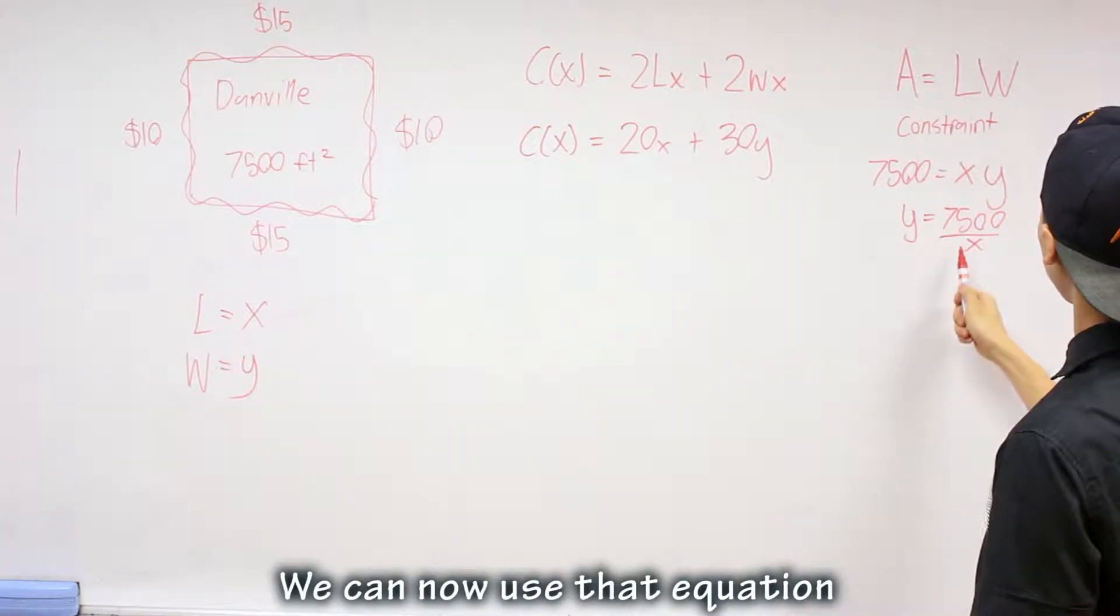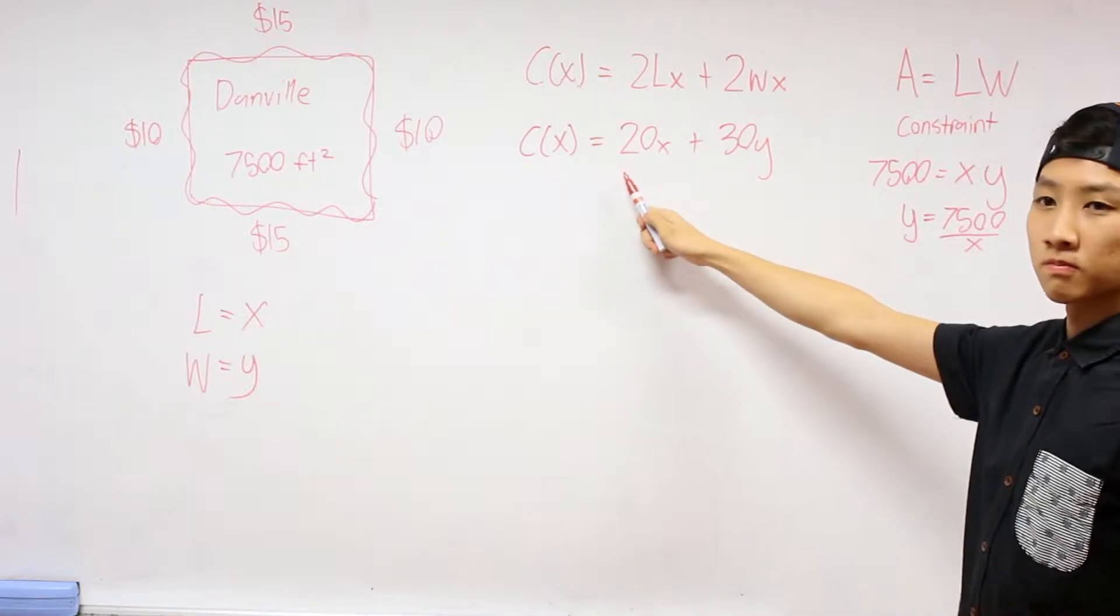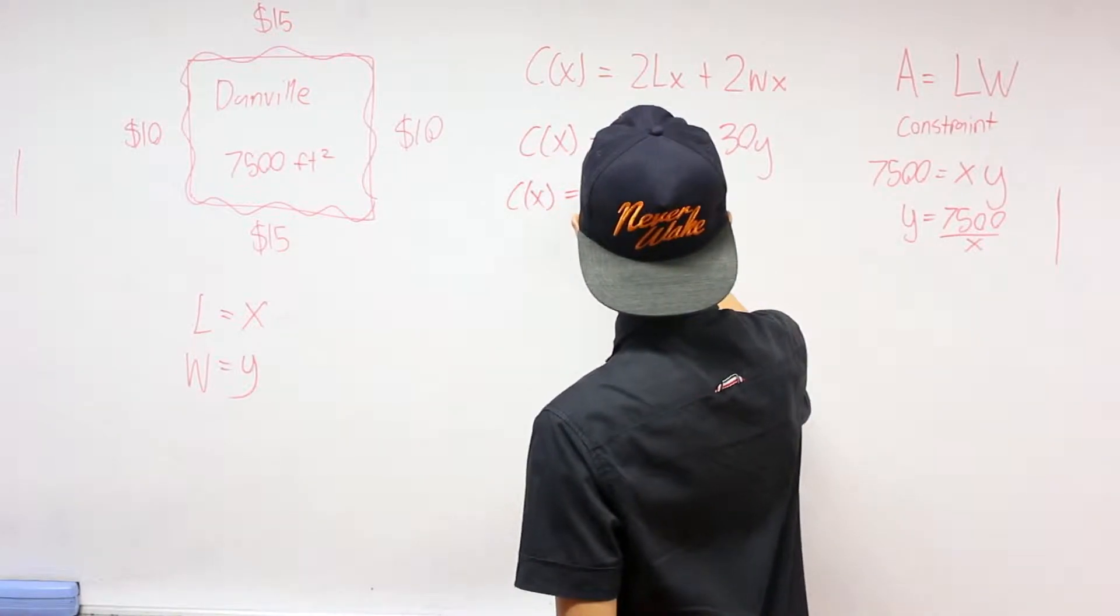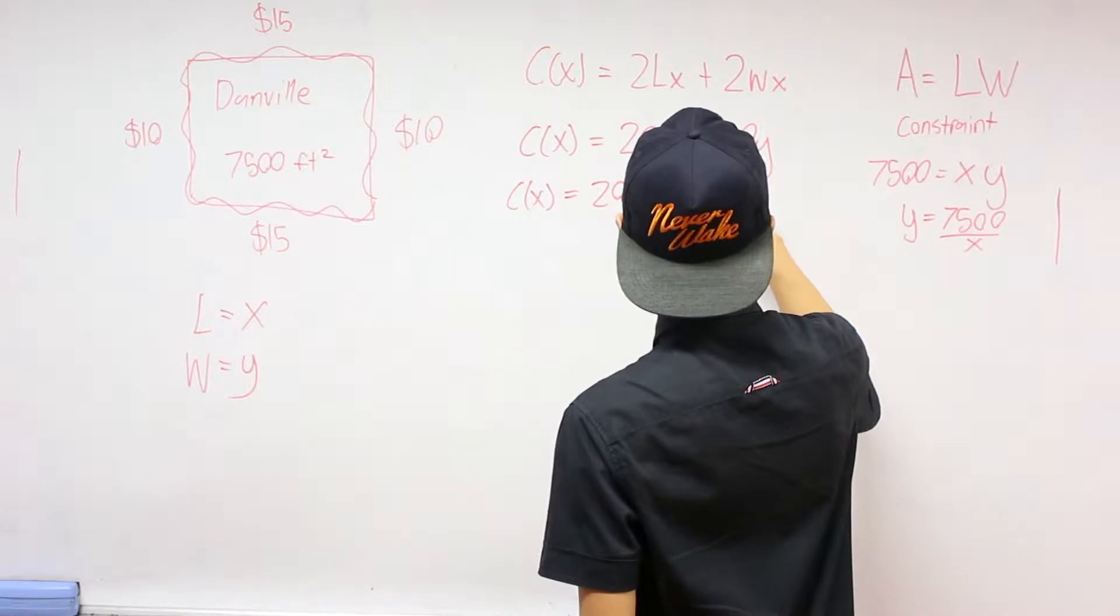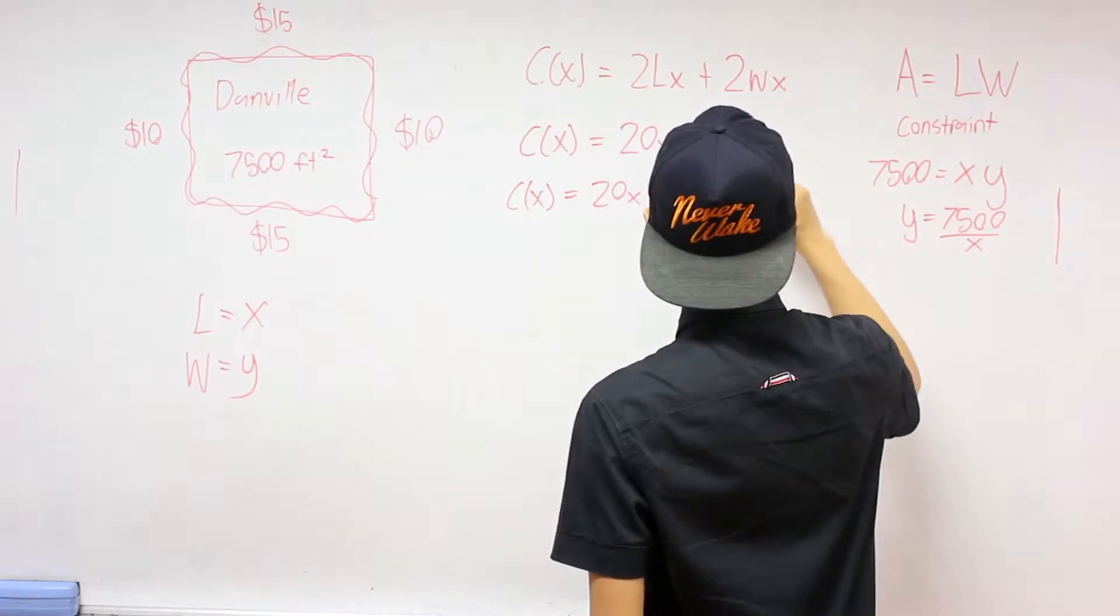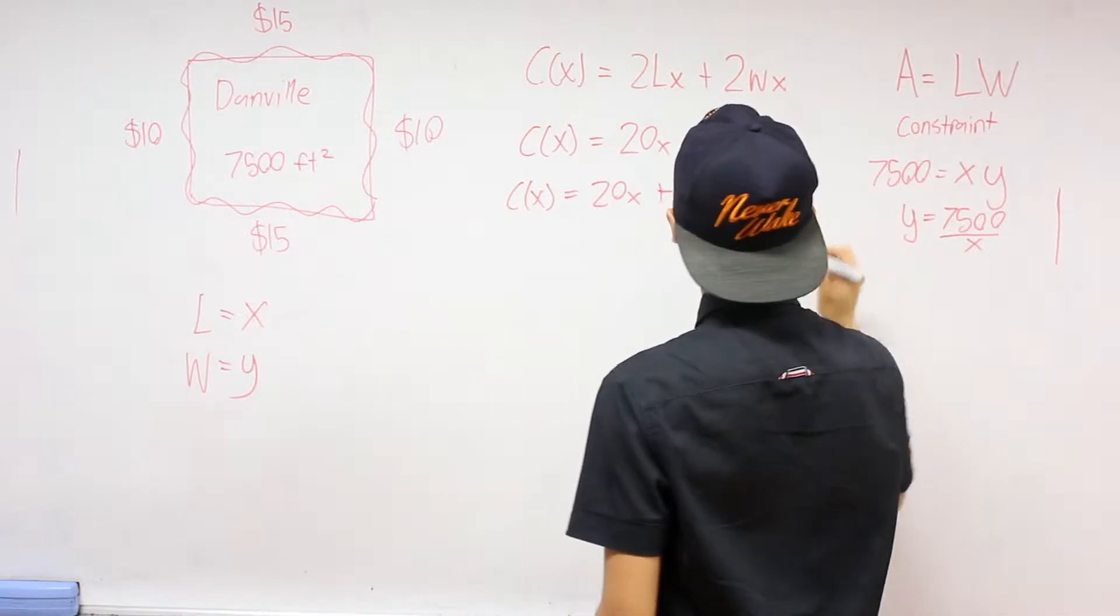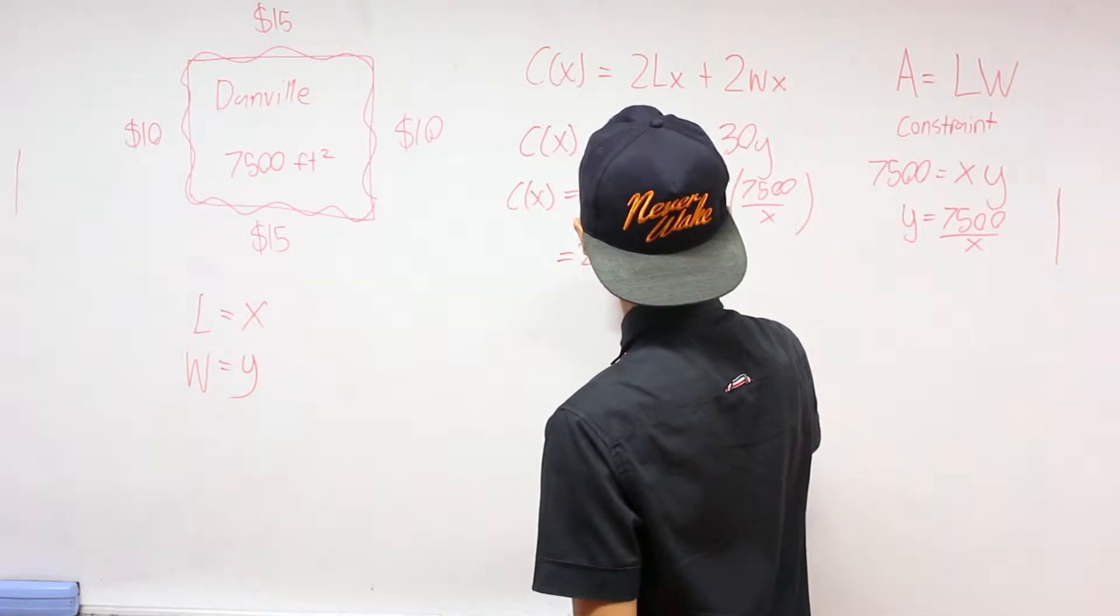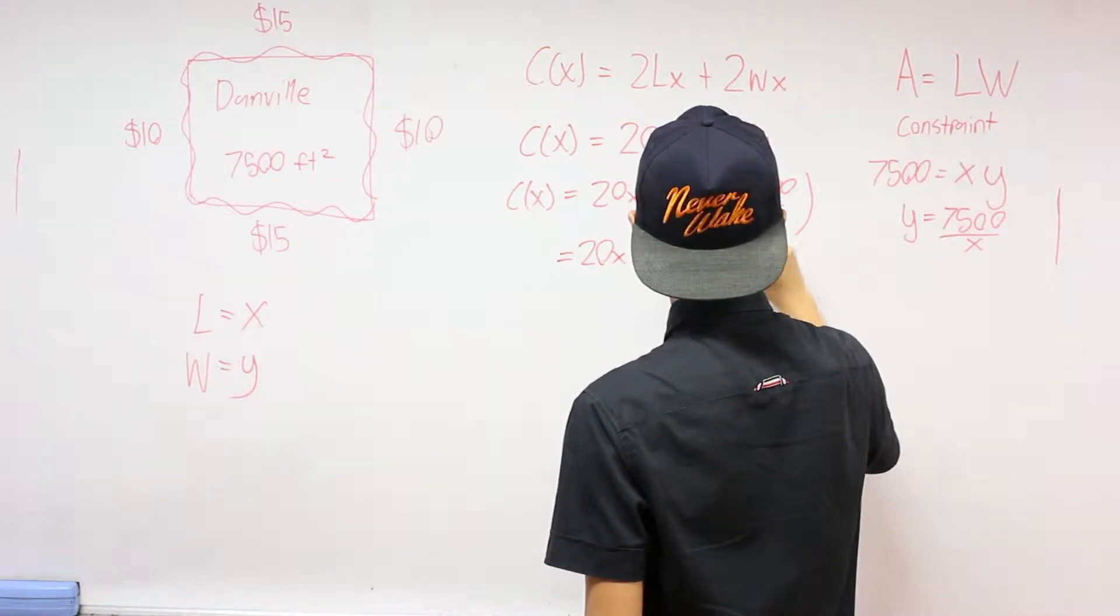We can now use the equation to sub it into our cost function. We end up with cost equals to 20X plus 30 times 7,500 over X. When simplified, we ended up with cost equals to 20X plus 225,000 over X.